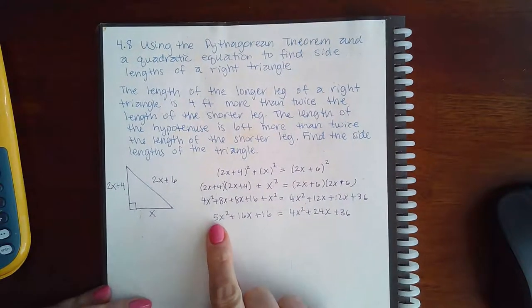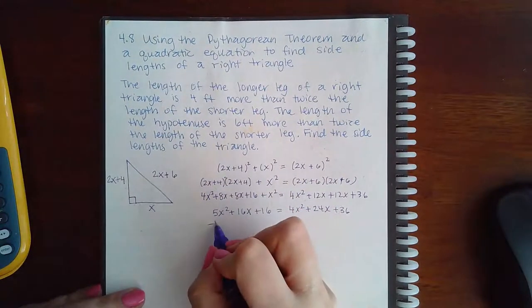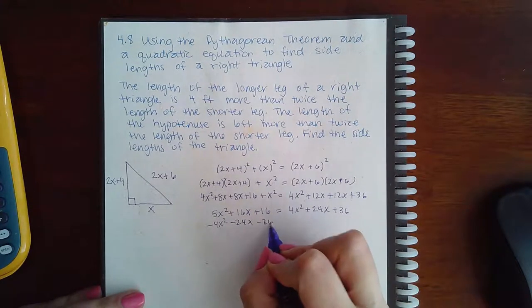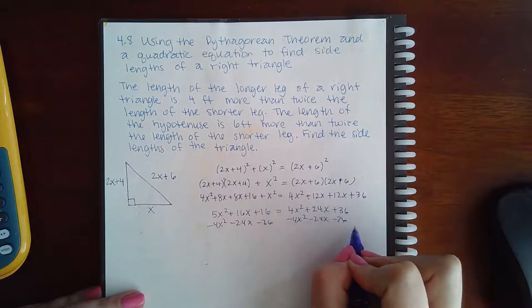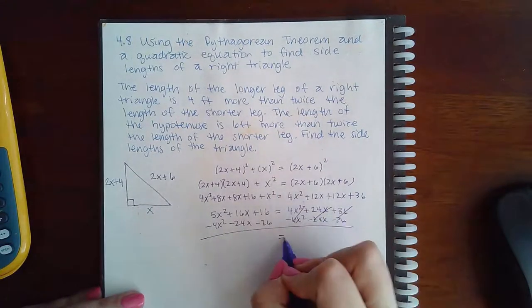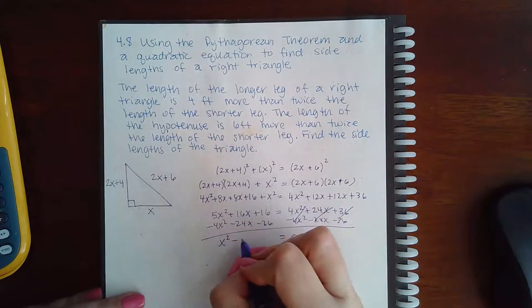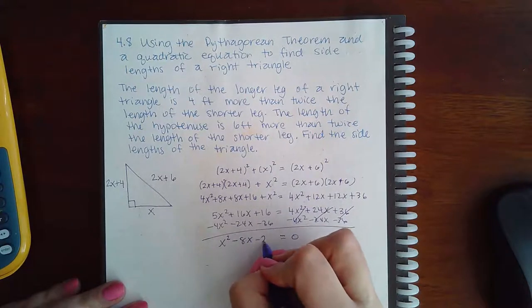There are more positive x's on this side, so I'm going to move these terms over. So minus 4x squared minus 24x and minus 36 on both sides. So these terms go to 0. Here I end up with x squared minus 8x minus 20.